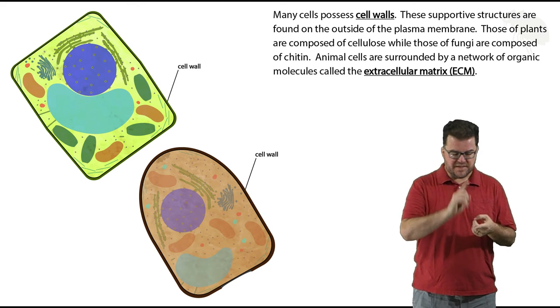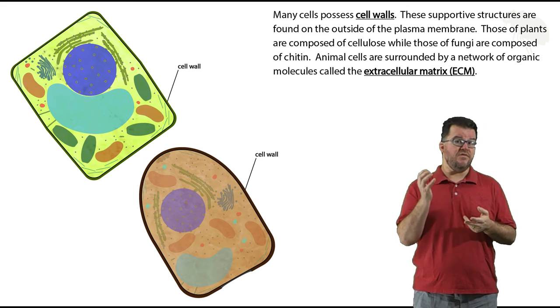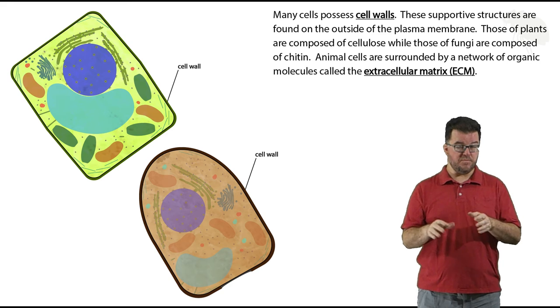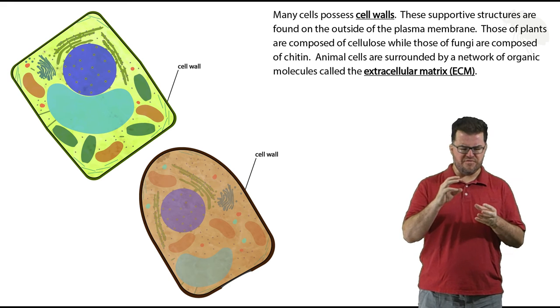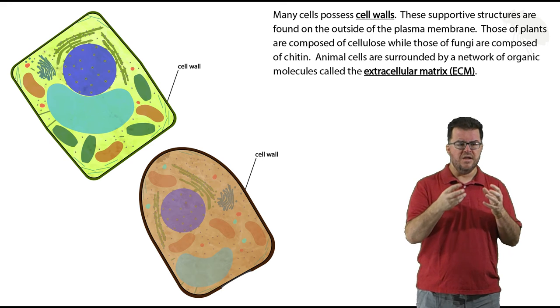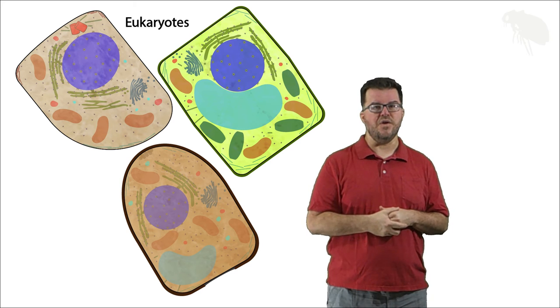Animal cells don't have a cell wall, but they do have an elaborate extracellular matrix, which I'm not showing in these pictures. It's a network of proteins and other macromolecules, organic molecules that interact to form a supportive mesh network around the cell.